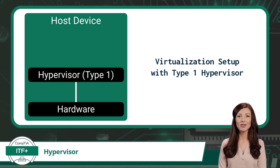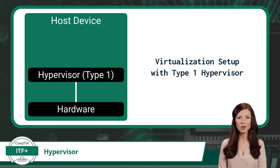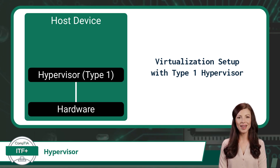Next, we will need a hypervisor. A hypervisor manages the virtualization environment and facilitates interactions with the host device's hardware. With hypervisors, there are two types. With this virtualization setup, we will be using a type 1 hypervisor. A type 1 hypervisor, also referred to as a bare metal hypervisor, is a purpose-built operating system that is installed directly on the host device as the host device's OS, managing our virtualization environment and facilitating interactions with the host device's hardware.